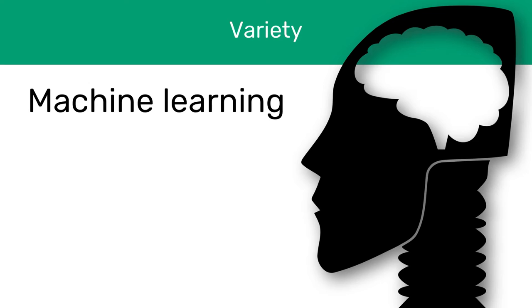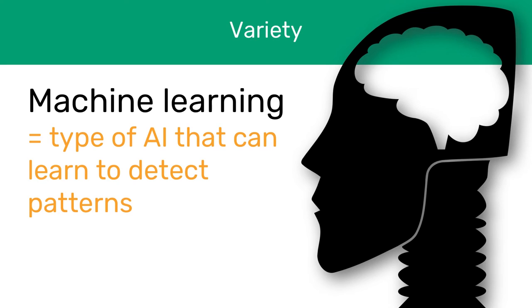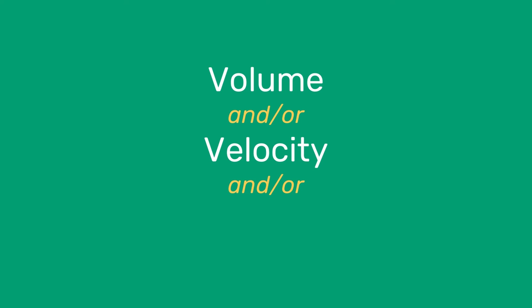In order to extract patterns from the data, you may need to apply machine learning techniques. This is a type of artificial intelligence that can discern patterns without explicitly being programmed to do so. Big data is a generic term that is really applied as soon as you start to encounter difficulty when collecting and analysing a dataset. A combination of the three V's is what leads you to not being able to use regular data containers, such as one server hosting a relational database.